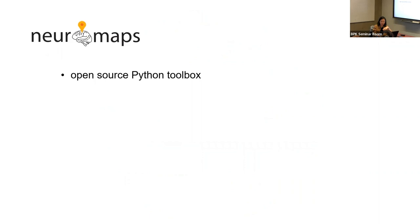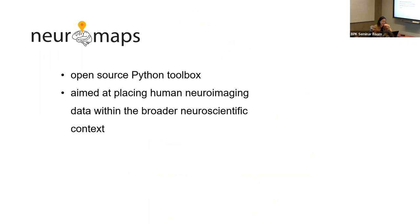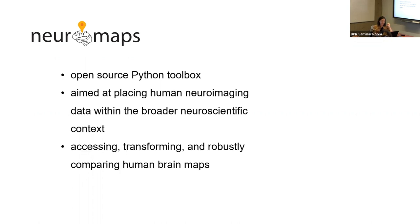Each of these individually is useful and has its own fields and subfields. But as we start to layer these different phenotypes on top of one another, we not only get a more comprehensive view, but we also get an idea of how these different layers are interacting. So what do we need? We need data — all the different maps — represented in the same way so they can be quantitatively compared, and we need robust statistical methods to make comparisons. That's what Neuromaps is trying to do for the brain. It's an open source Python toolbox aimed at placing human neuroimaging data within the broader neuroscientific context.